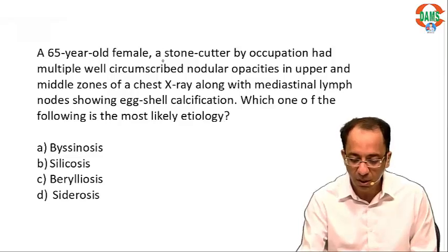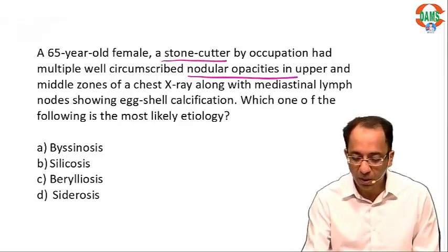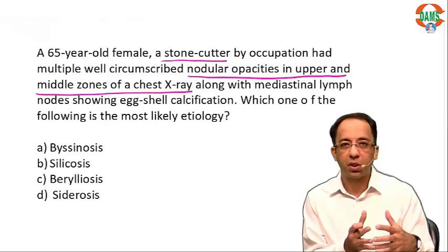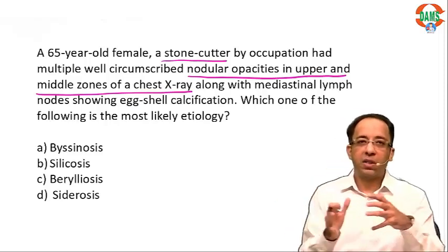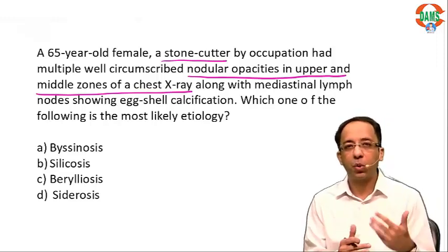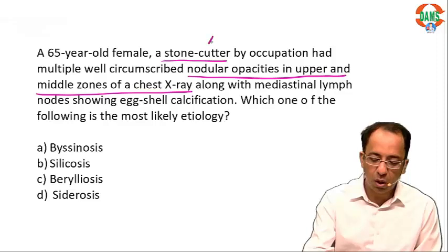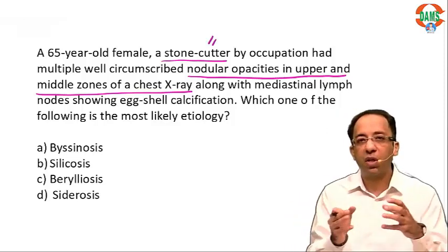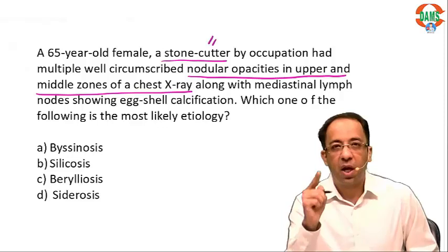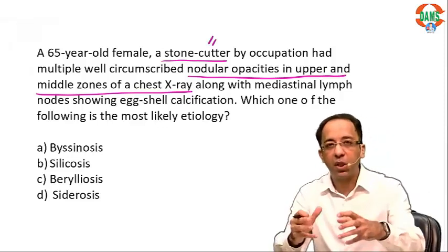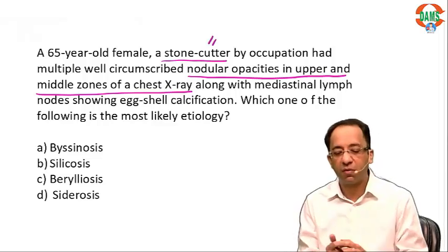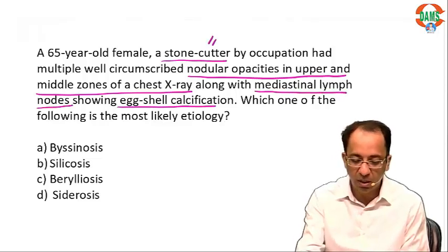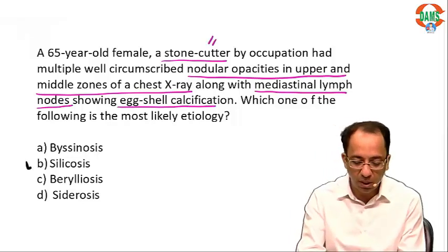The first question involves an occupational disease: a stone cutter with nodular opacities in the upper and mid zones of the chest X-ray. This is not asbestosis — asbestosis would be lower zone predominant, while silicosis and coal worker's pneumoconiosis are upper zone predominant, and the profession is not suitable for asbestosis. Thinking of silicosis, there should be enlargement of lymph nodes. Silica-laden macrophages deposit in the hilar and mediastinal lymph nodes, showing eggshell calcification. The question mentions mediastinal lymph nodes with eggshell calcification — all pointing to silicosis as the single best answer.